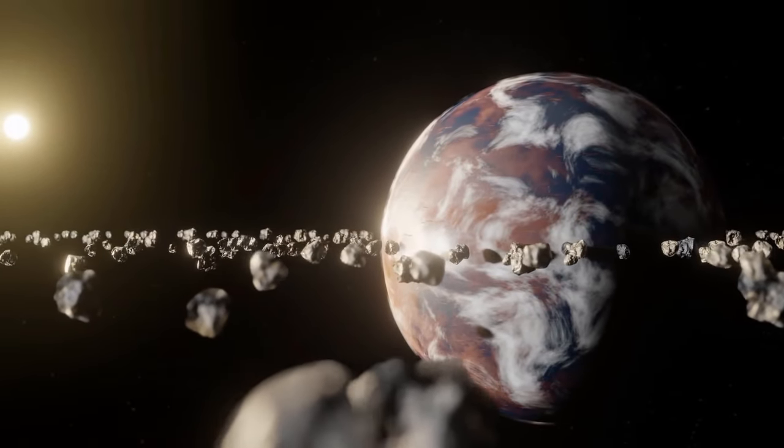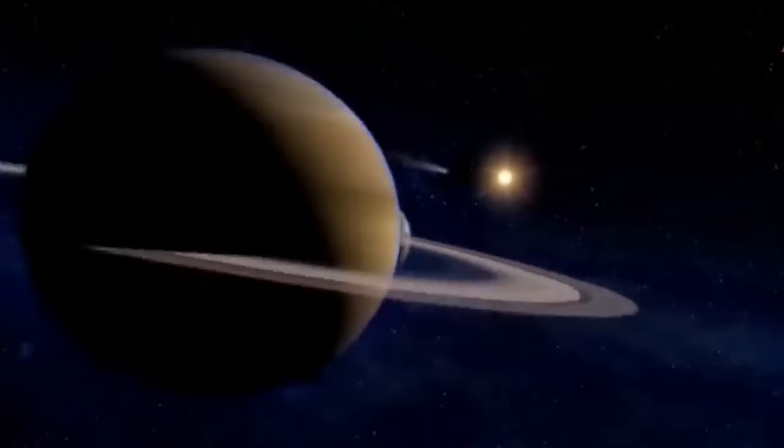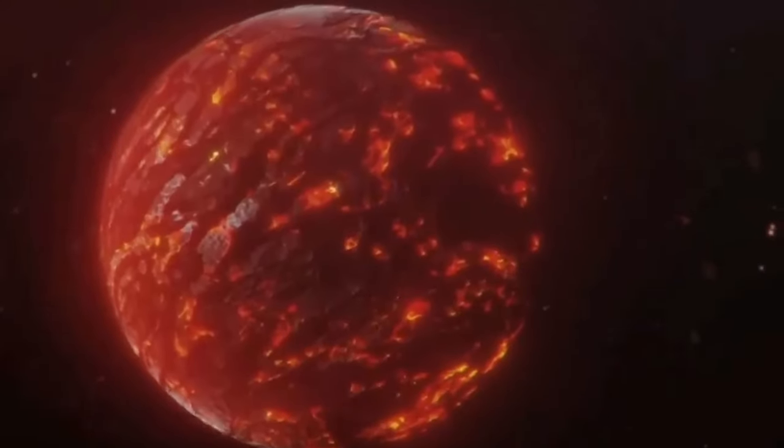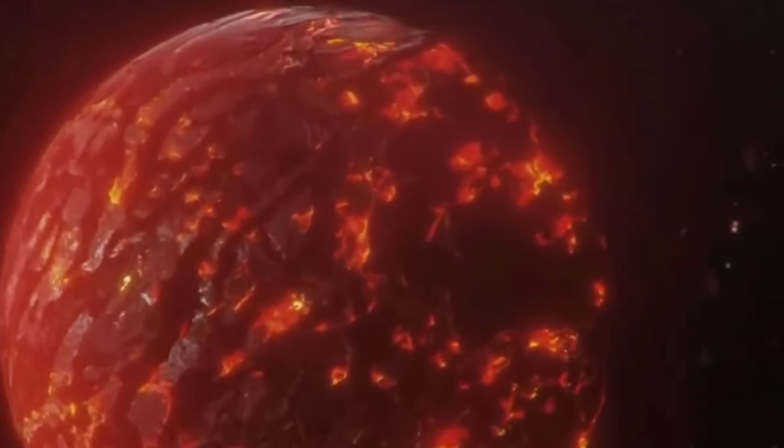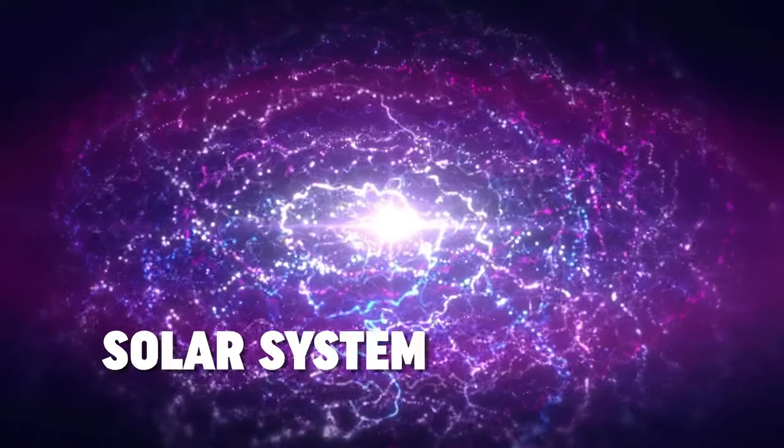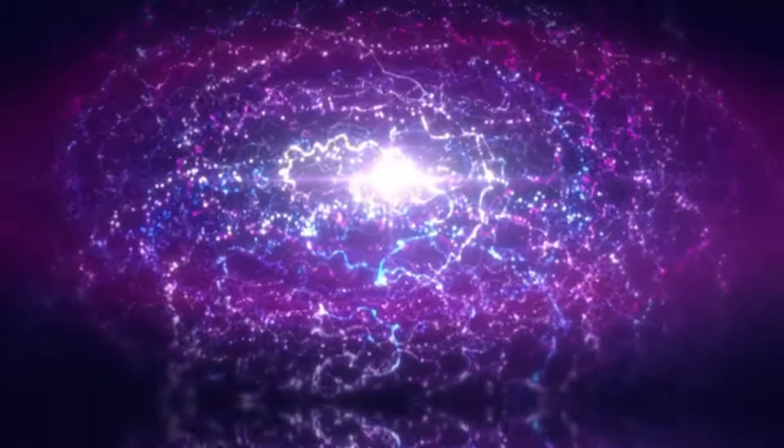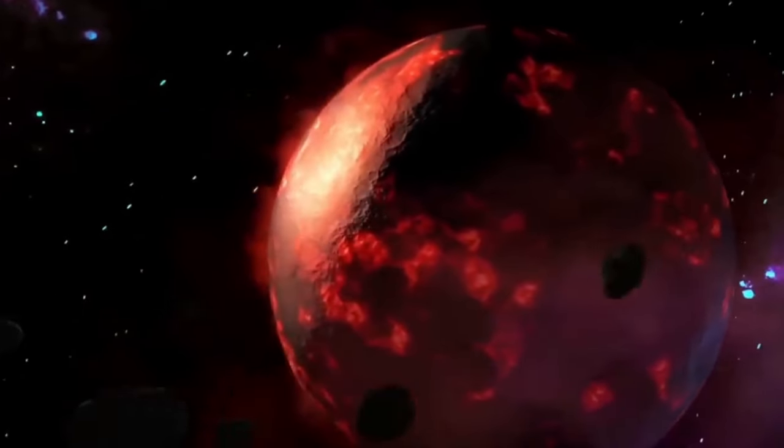Tiny particles of dust and gas began to stick together, gradually forming larger and larger bodies, setting the stage for the complex process of planetary formation. The birth of the solar system, as described by the solar nebula theory, is a story of transformation and creation.